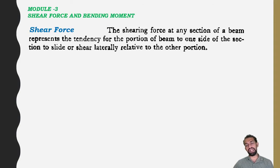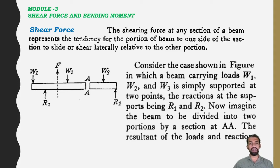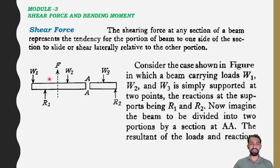The shearing force at any section of a beam represents the tendency for the portion of a beam to one side of the section to slide or shear relative to the other portion. Consider the case shown in the figure, in which a beam carrying loads W1, W2, W3 is simply supported at two points.